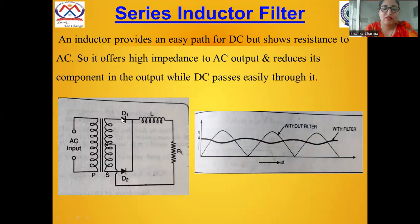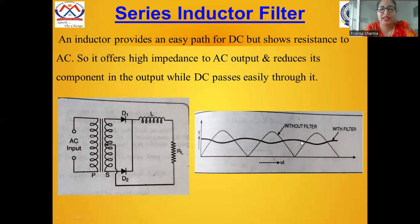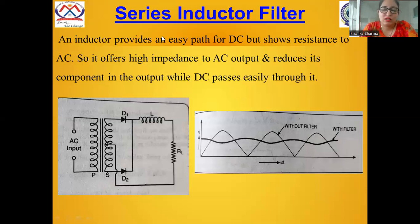Here you can see the diagram for the series inductor filter. This is the rectifier where diodes D1 and D2 are used for rectification, as diodes only conduct when forward biased. After rectification we obtain a pulsating DC, which is then passed through the filter circuit containing an inductor connected in series with the rectifier. After passing through the filter circuit, the pulsations are removed to a very great extent and a constant voltage is obtained. An inductor provides an easy path for DC while it shows high impedance to AC, reducing the AC component in the output while the DC component passes easily through it.